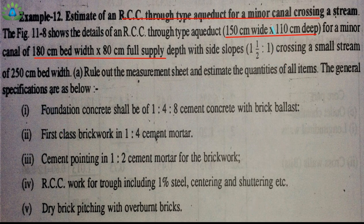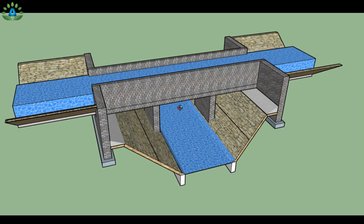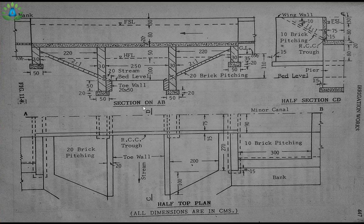First, let's understand what an aqueduct is. An aqueduct is a cross drainage structure in which the irrigation canal is taken over the river. The river and the canal are perpendicular to each other. Here we have the section of the aqueduct on one side, a half section, and a half top plan.